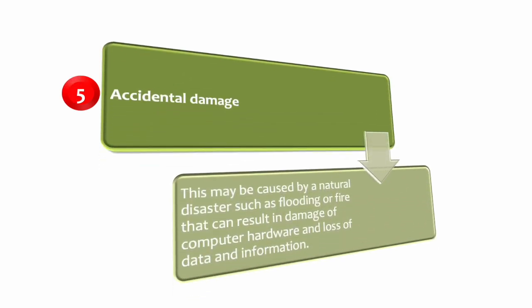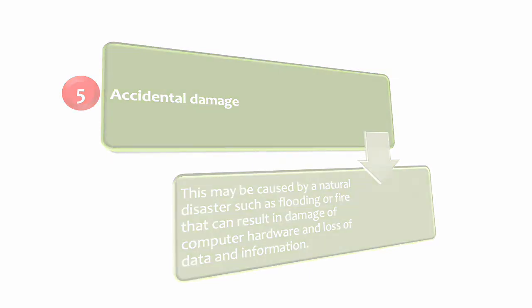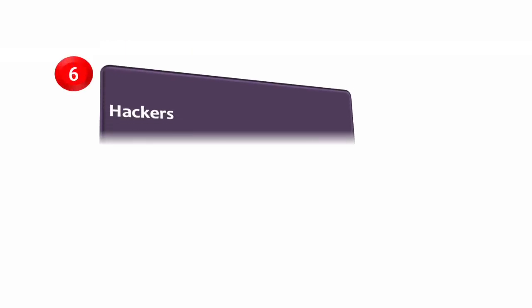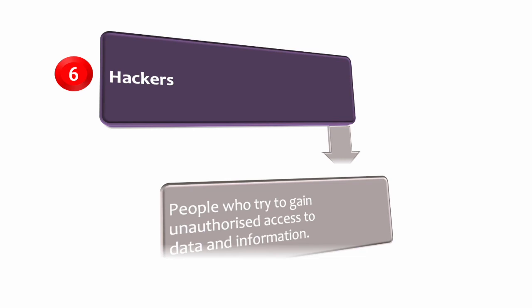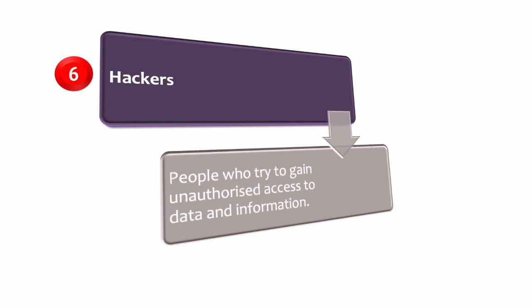Accidental damage may be caused by a natural disaster such as flooding or fire, which can result in damage of computer hardware as well as loss of data and information. Hackers are people who try to gain unauthorized access to data and information.